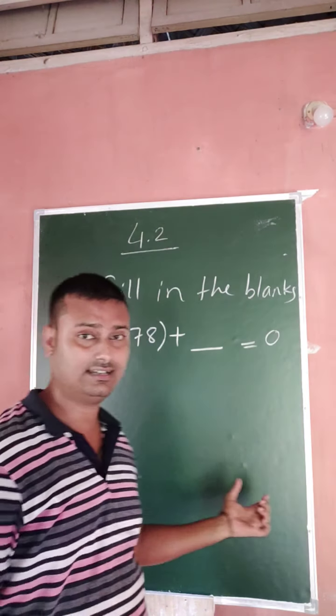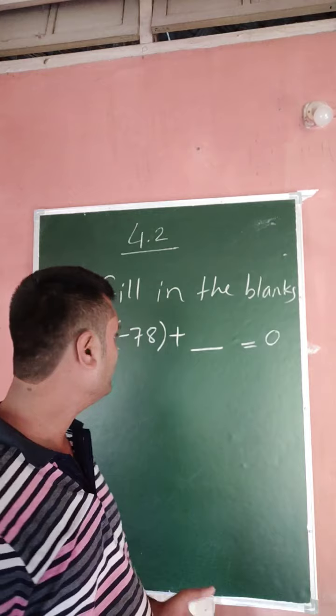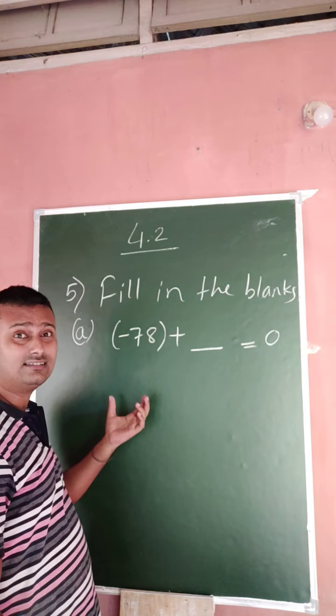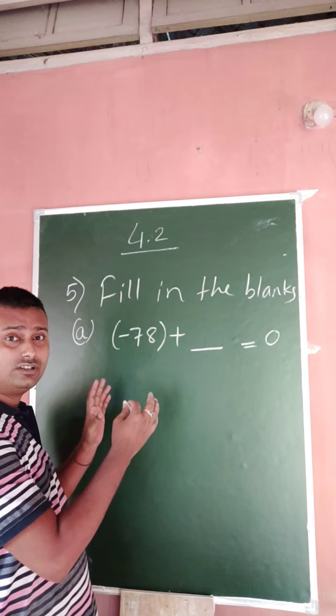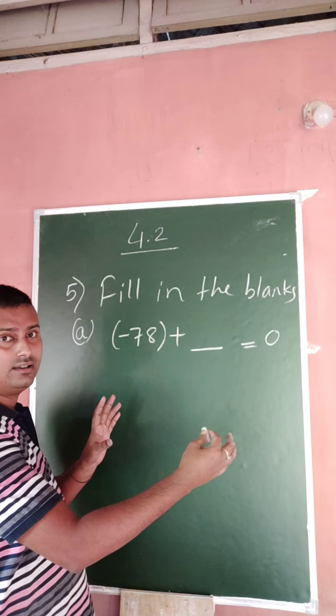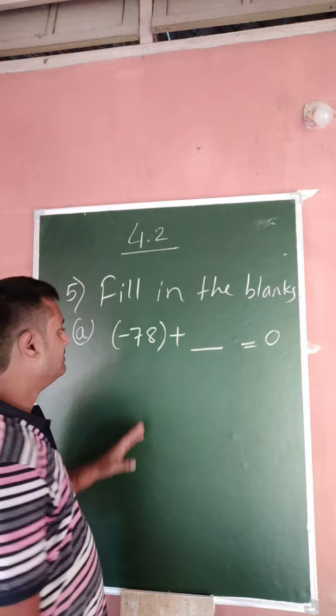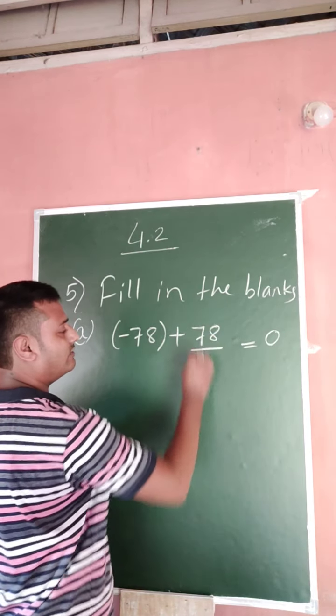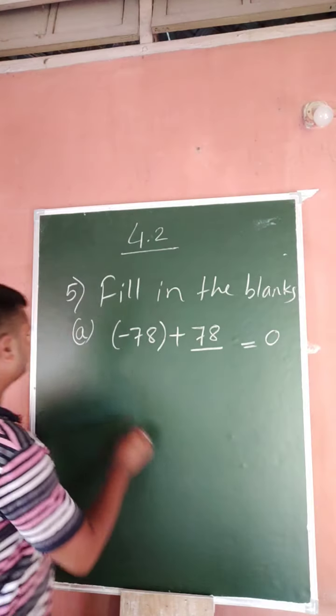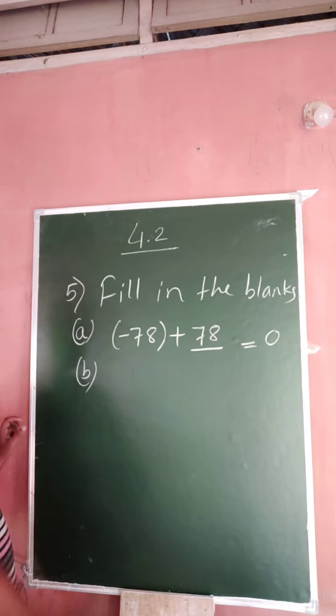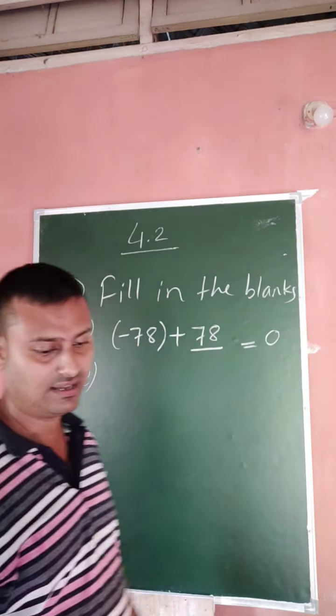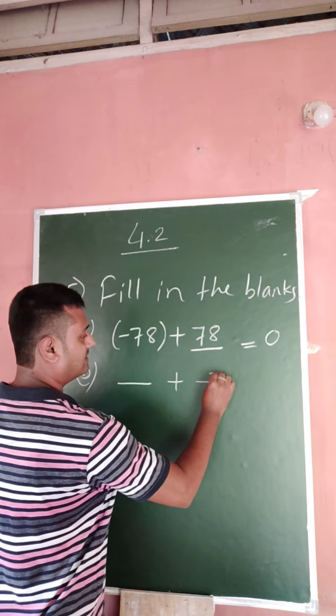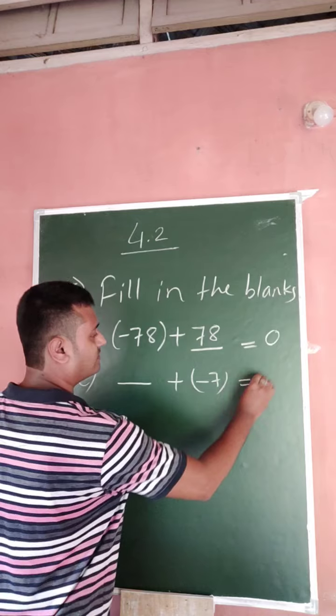Already we discussed that in class 5: positive number plus one negative number will be 0. Then minus 78 plus 78 then 0. So this is equal to 0. This plus minus, minus 7 plus minus 78 equals 0.